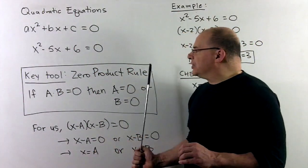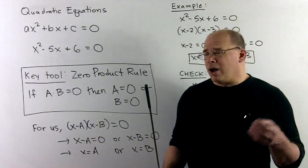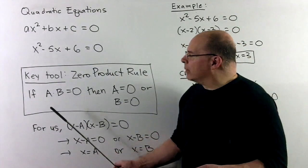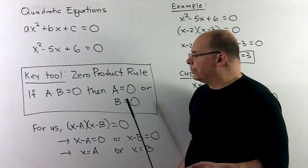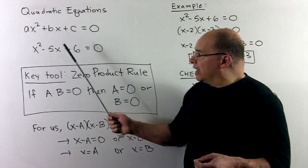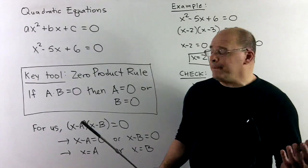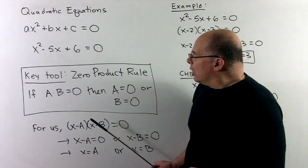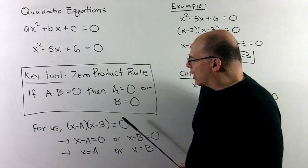The zero product rule just says if I multiply two numbers and get zero, one of them had to be zero to start off with. More formally, if a times b is zero, then a is zero or b is zero. The way we want to use this, we'll assume, for instance, that this x squared minus 5x plus 6, we know how to factor that. That would give us two factors set equal to zero, and the only way a product of things could be zero is if one of these was zero to start off with.